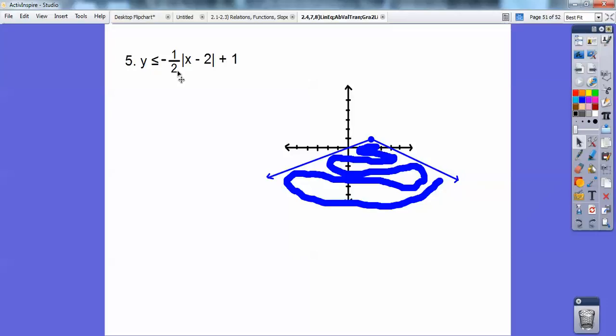And I tested (0, 0). I can't test (0, 0) because this goes right through it. So why don't you test (1, 1). (1, 1) is right there. When you plug in (1, 1), 1, 1 would make this a false statement, so don't shade the outside because (1, 1) is just on the outside. You shade the inside right there.